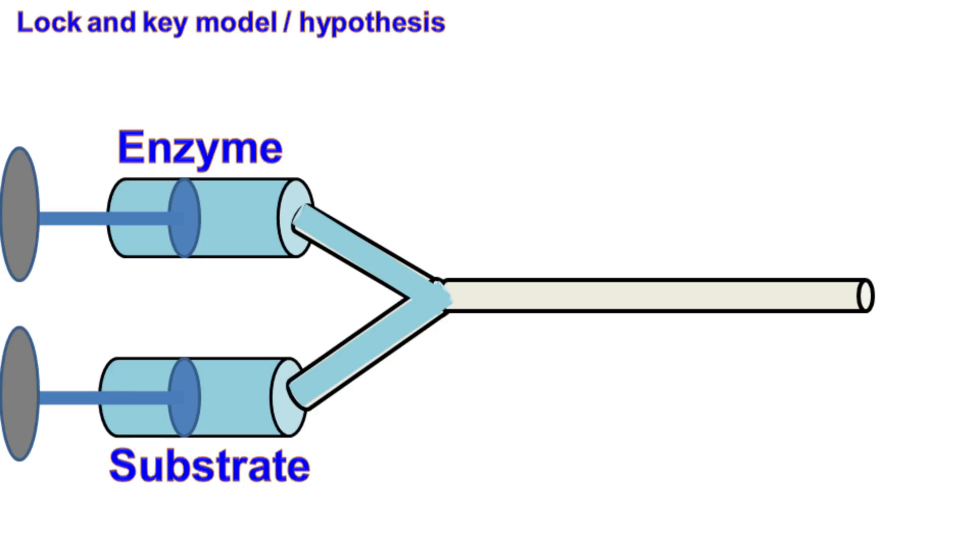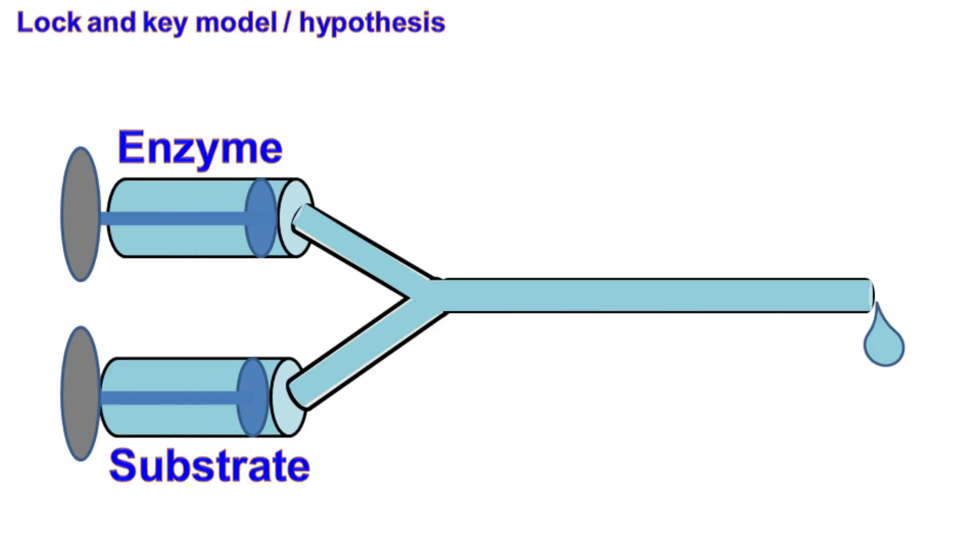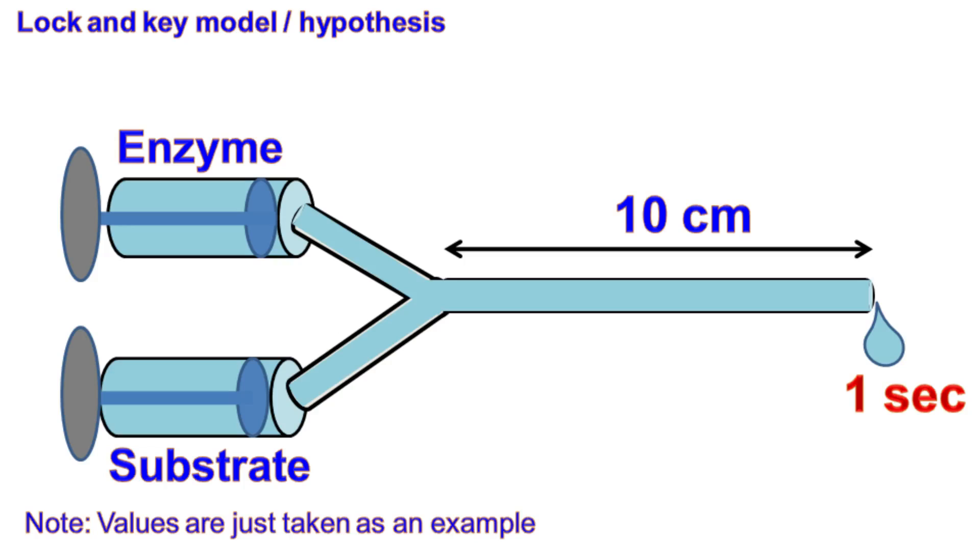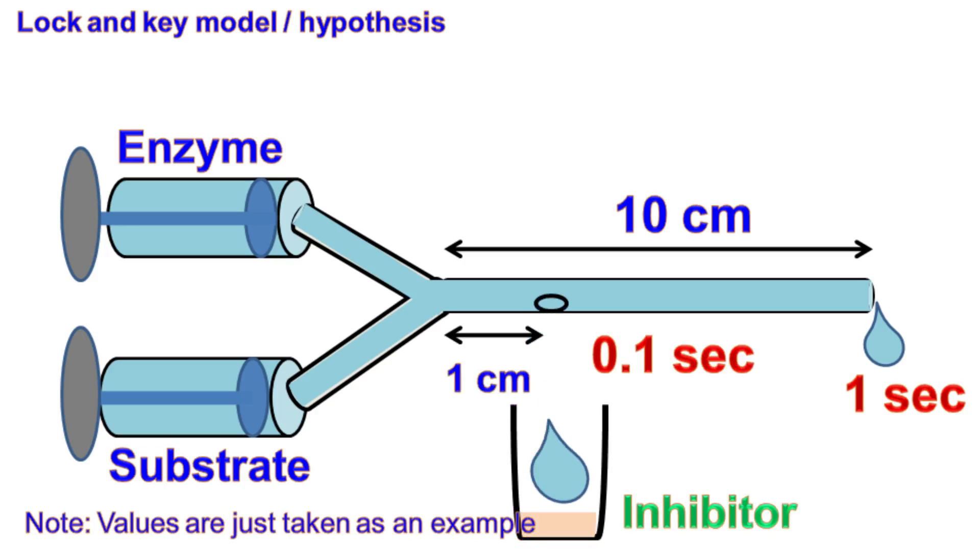The same technique can be used for enzyme and substrate. We can have two syringes, one filled with a solution of enzyme and the other filled with a solution of substrate. When both syringes are purged in a single pipe, the enzyme acts on the substrate and starts the reaction. To know what is happening in one-tenth of a second, we can have an outlet from the pipe and have an inhibitor in the collection tube. The same can be done for different time intervals.